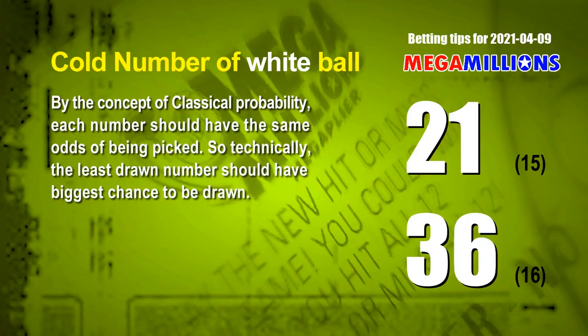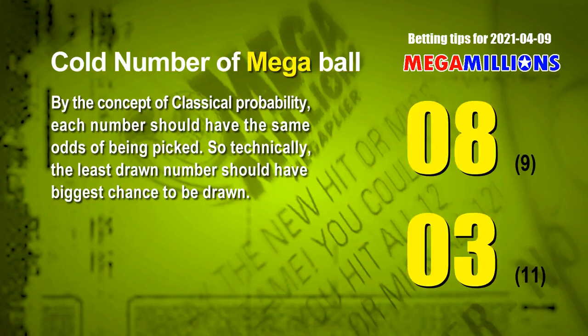We have two more tips: cold numbers and overdue numbers. By the concept of classical probability, each number should have the same odds of being picked, so technically the least drawn number should have the biggest chance to be drawn. Counting hundreds of results, the two coldest white balls are 21 and 36. White ball 21 has been drawn only 15 times in the last 359 draws; white ball 36 only 16 times. The two coldest mega balls are 08 and 03. Mega ball 08 has been drawn only 9 times, and mega ball 03 only 11 times in the last 359 draws.